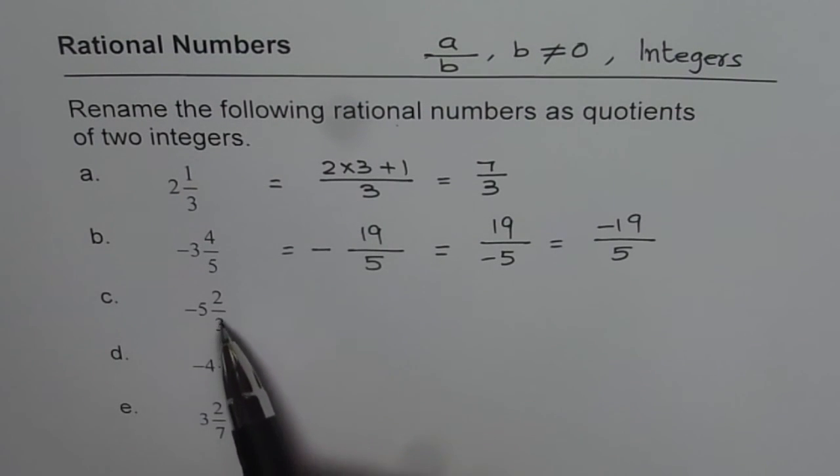...you can write rational numbers for the rest 3: -5 2/3, -4 3/5, and 3 2/7. Thank you.